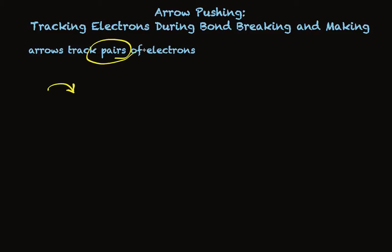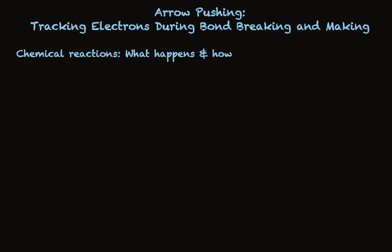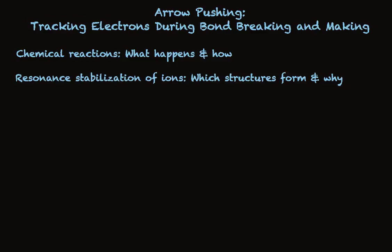There are two different kinds of things where this Arrow Pushing Convention to track electron pairs is particularly important. One is chemical reactions — determining what happens and particularly how that happens. We're going to need to track what bonds are made and broken. Secondly, resonance stabilization of ions is particularly important. We need to understand how we can write resonance structures, which resonance structures can we write, which are formed, and why. The Arrow Pushing Convention will help us track that too.